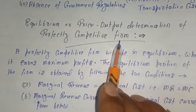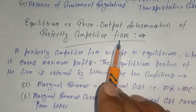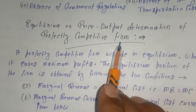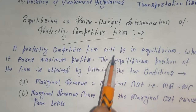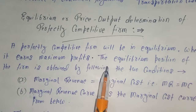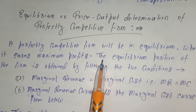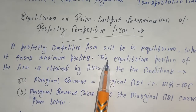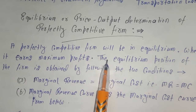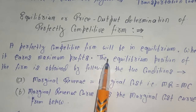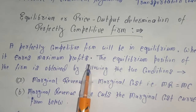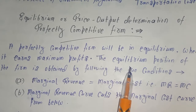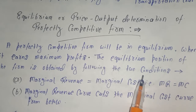In the previous lecture, I discussed what a perfect market is and its different features. Today, when any firm in the perfect market is looking for its price or output, it seeks that particular equilibrium point where it is earning maximum profit. To obtain the equilibrium position, the following two conditions must be satisfied.